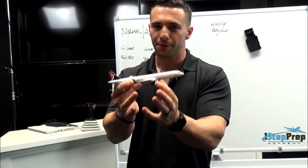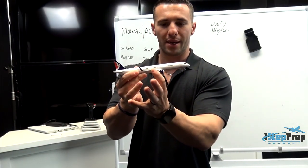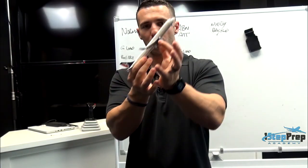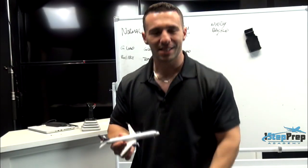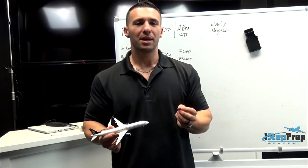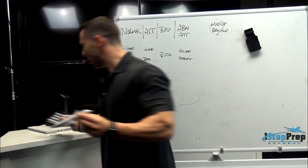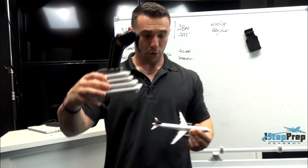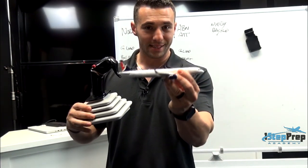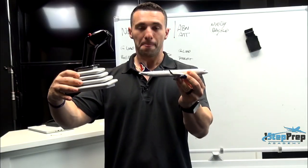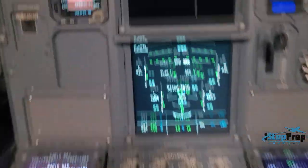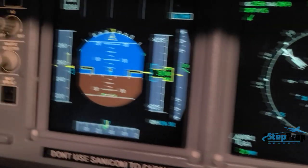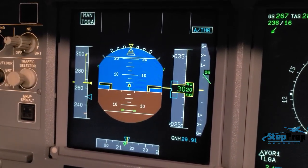For the A320 and A340, if the engines are mounted under the wing, upon spool-up they will have a tendency to bring the nose up, and upon thrust reduction a tendency to bring the nose down. This is masked in normal law — because if your side stick has no input, the jet maintains level flight. So when you advance the thrust levers with no side stick input in normal law, where G-load is commanded, the tendency for the nose to come up is fairly minimal.